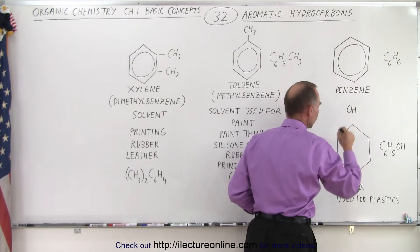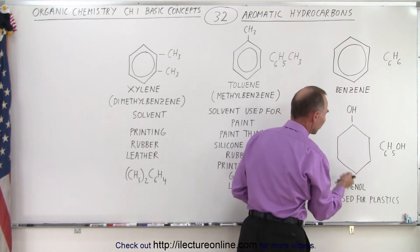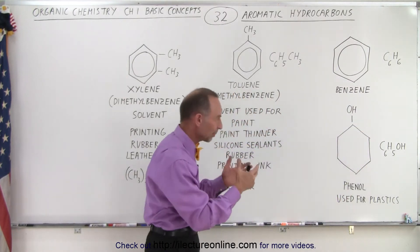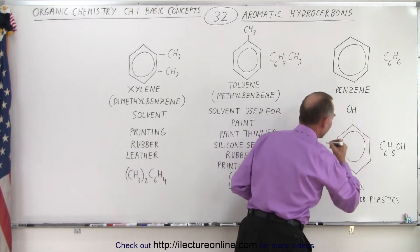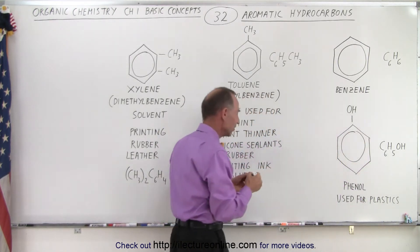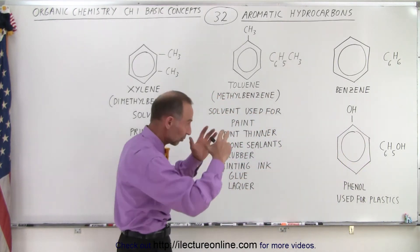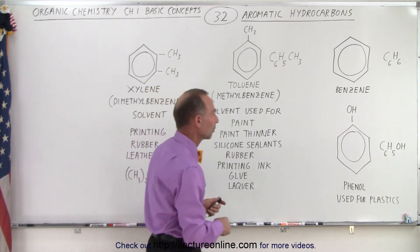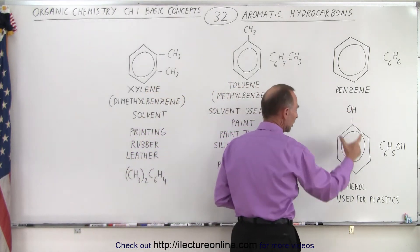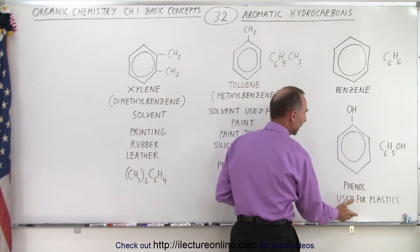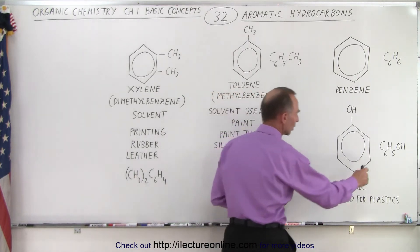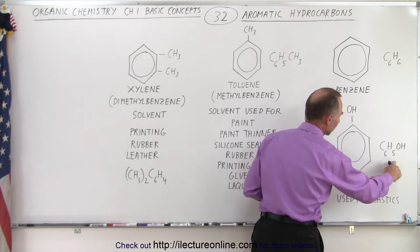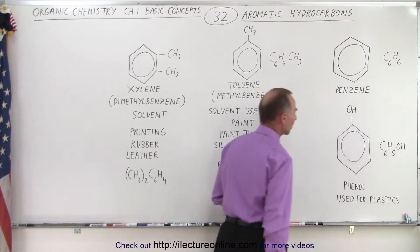Now, notice that when we replace one of the hydrogens with an OH, it becomes phenol. That's the common name of that particular molecule. We still have the ring symbol inside because it is a ring structure. So when we replace one of the hydrogens with an OH, it becomes phenol — something that we use for plastics. The chemical formula is written as C6H5 with an OH attached at the end.